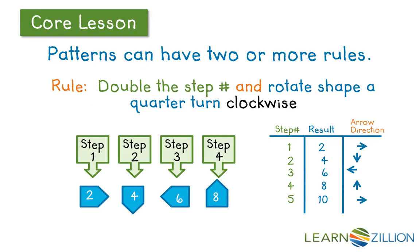Now I can start looking for patterns within my patterns. I notice as my step numbers grow by 1, the results are even numbers: 2, 4, 6, 8. And my arrows, they go right, down, left, up, right. And I notice that I have a repeating pattern within that. That's called the core of the pattern. And it goes right, down, left, up, and then I can see that it starts again with right.